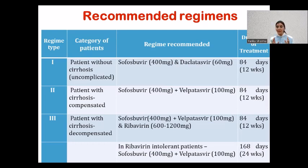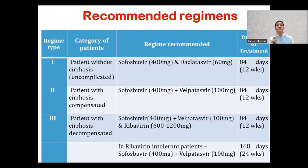One more important point from the guidelines: Category 1 patients — uncomplicated HCV without cirrhosis — do not require lifelong follow-up. They are tested after 3 months, and if HCV reactivity is absent, they are freed completely from treatment. However, Category 2 and 3 patients who had cirrhosis will require lifelong monitoring and follow-ups, because they may develop complications of cirrhosis or hepatocellular carcinoma, and early identification is essential.